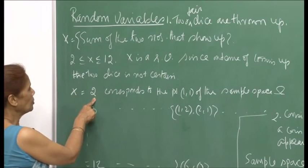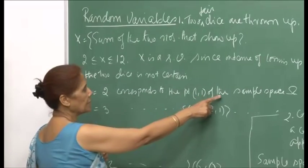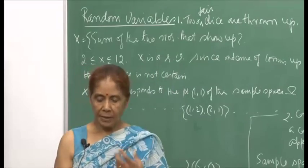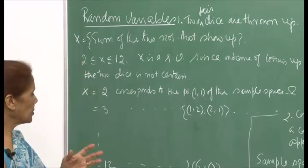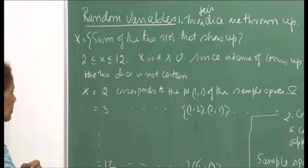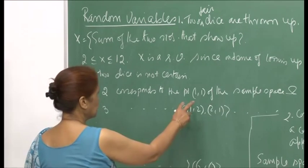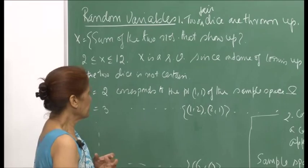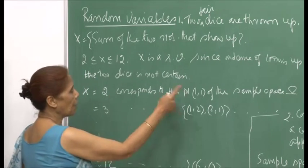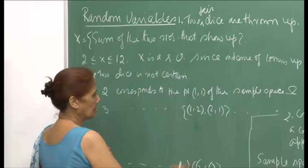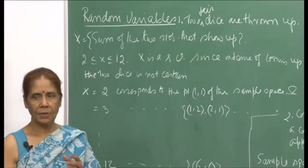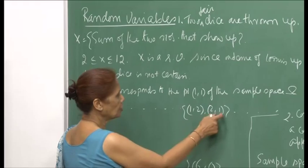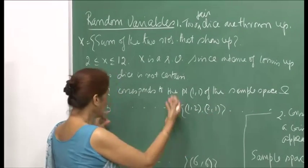When x is equal to 2, it corresponds to the point (1,1) of the sample space. As I introduced the concept of sample spaces earlier, the sample space omega contains 36 pairs (i,j) where i varies from 1 to 6 and j varies from 1 to 6. When x equals 2, this corresponds to the outcome (1,1). If x is 3, it can be either (1,2) or (2,1) — both add up to 3, and so on.